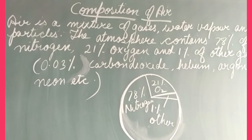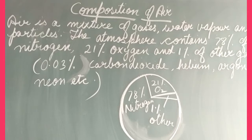What comes in other gases? That includes 0.03% carbon dioxide, helium, argon, neon, etc. When you add these up they become 1% of other gases.